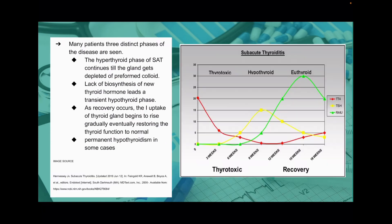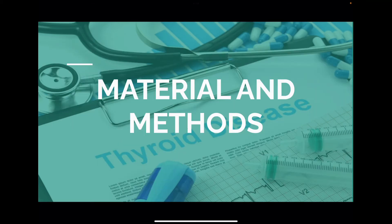Subacute thyroiditis, or SAT, generally proceeds through three distinct phases: the thyrotoxic phase due to release of preformed colloid, a hypothyroid phase due to lack of biosynthesis of new hormone, followed by a euthyroid phase during recovery. Some patients have permanent hypothyroidism.